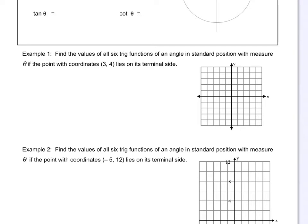So find the values of all six trig functions for an angle in standard position. What does standard position mean? It starts on the positive x-axis, with the vertex at the origin. So it starts in this manner. With measure theta — so the angle is going to be called theta — if the point with the coordinates (3, 4) lies on its terminal side. So we go and we find the point (3, 4), which is up here in quadrant 1, and that point lies on the terminal side of our angle. So the angle would be this angle inside here — we call that angle theta.